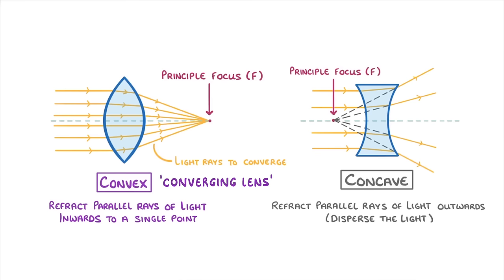Now regardless of what type of lens it is, all lenses have a principal focus on both sides, and they'll be equal distances from the centre. So our convex lens would also have a principal focus over here, and the concave lens would also have one here.